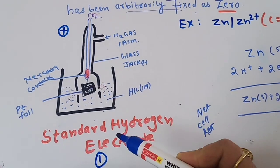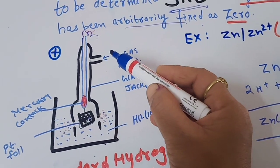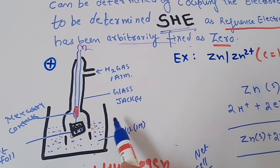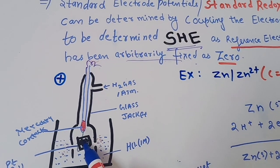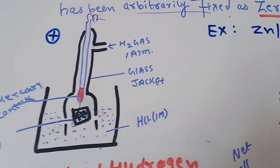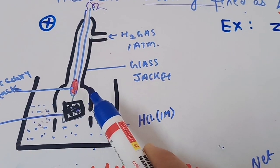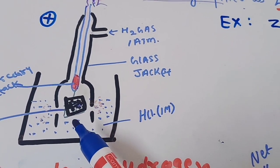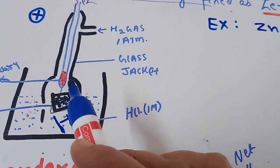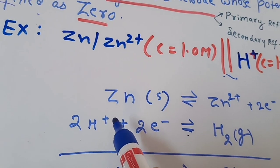Here I have drawn the diagram of the standard hydrogen electrode. It is made up of a glass jacket with one inlet from where H₂ gas comes in. The solution is HCl of concentration one molar, and there is a platinum foil connected to the outer circuit by a thin platinum wire. When hydrogen gas is bubbled at one atmospheric pressure, it is absorbed by the platinized platinum sheet. As a result, an equilibrium is established between the H₂ gas molecules and H⁺ ions in solution, making this a reversible electrode.